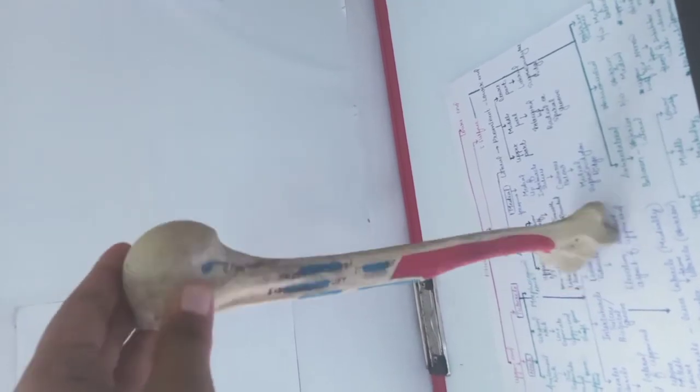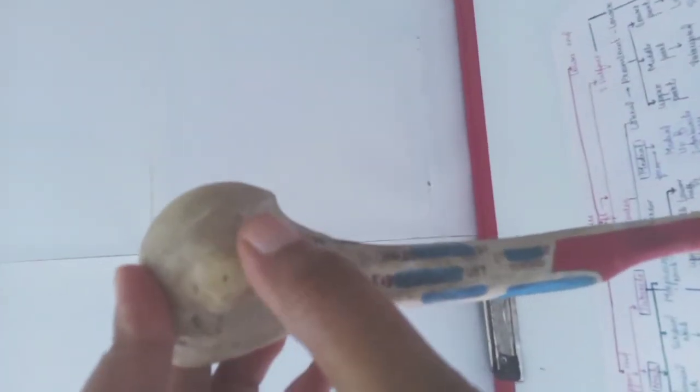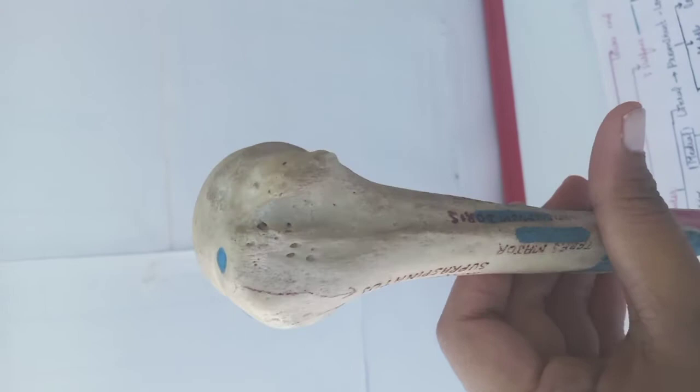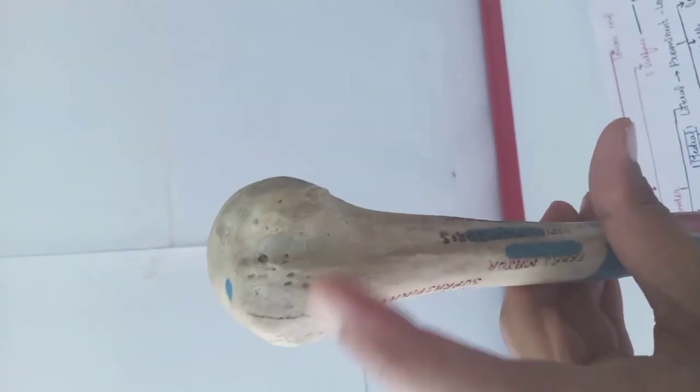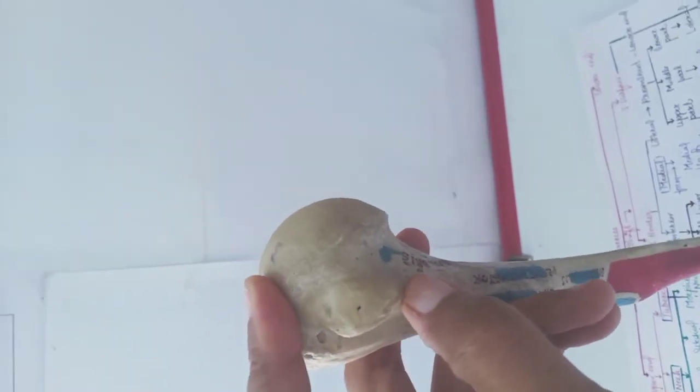Then it has tubercles. This is the lesser tubercle and this one is the greater tubercle. The lesser tubercle is projected in front of the upper end.